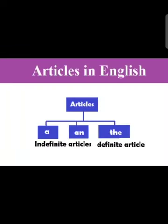First of all, we will have a basic overview about articles. So children, what are articles? Words used before a noun, or that modify a noun, are called articles. In English there are three articles: A, AN, and THE. A and AN are called indefinite articles, and THE is called the definite article.